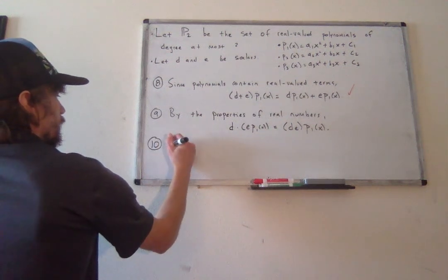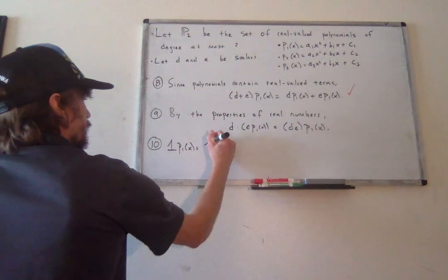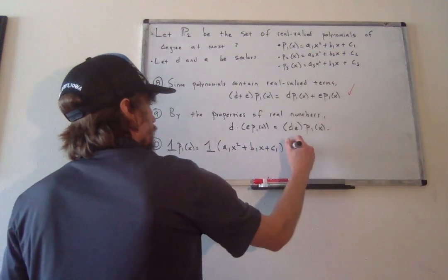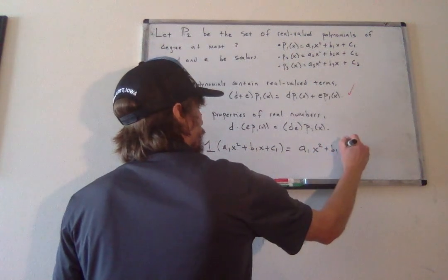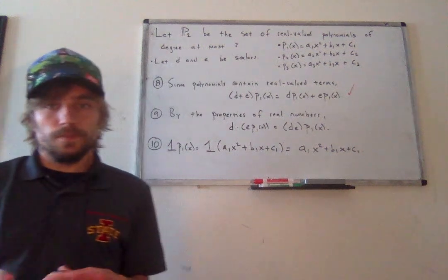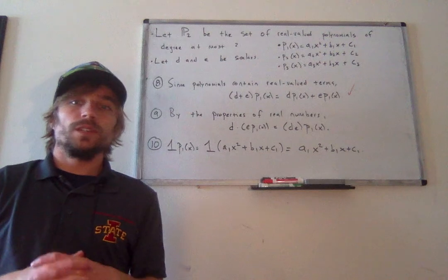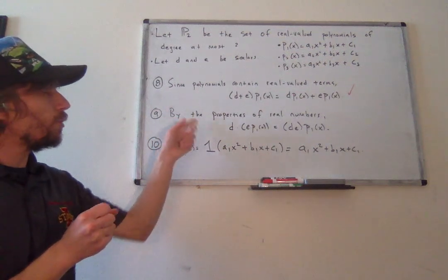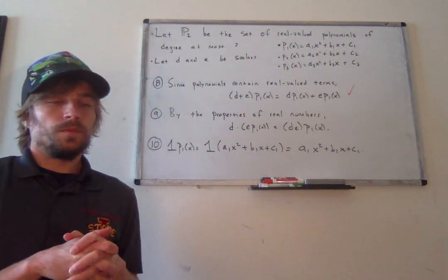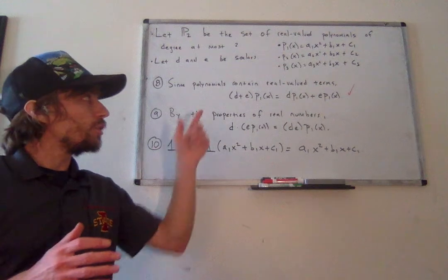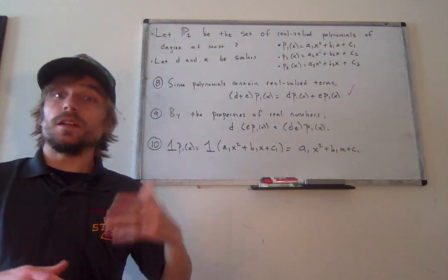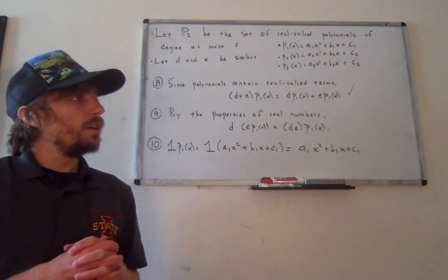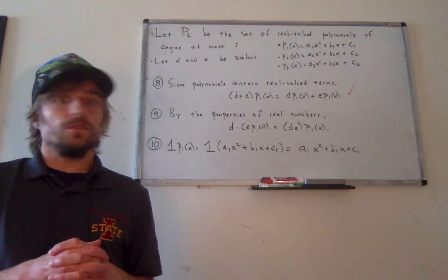Finally, property 10: if I multiply any polynomial times 1, I just get back the original polynomial. So it turns out the set of polynomials of degree at most 2 is actually a vector space. Check the worksheets for full expanded solutions to properties 8 and 9 — try mimicking what happened in property 7. In the worksheet there's also a problem where you'll show that matrices can form a vector space as well, and then we'll move on to video 2 of this chapter.